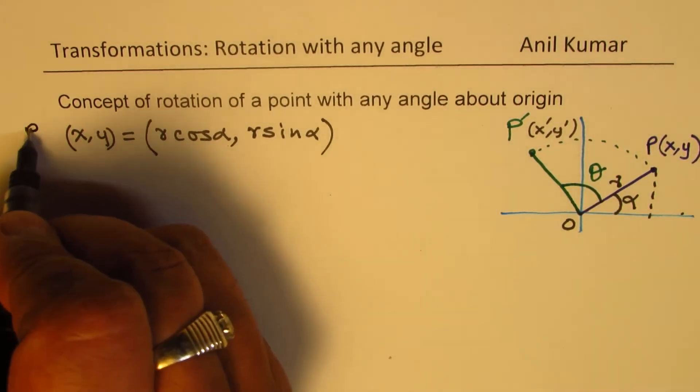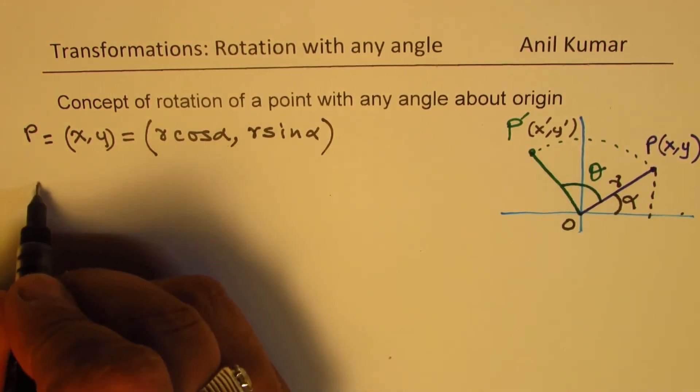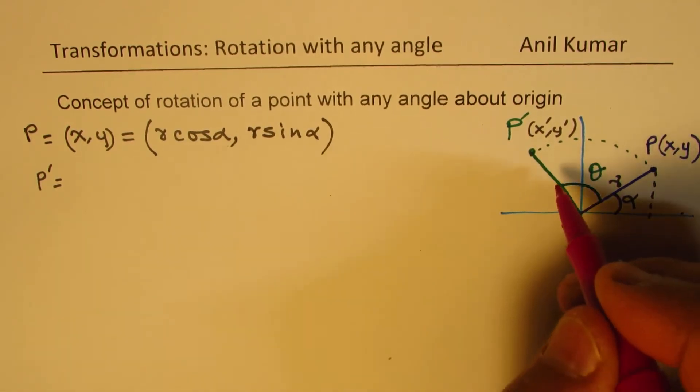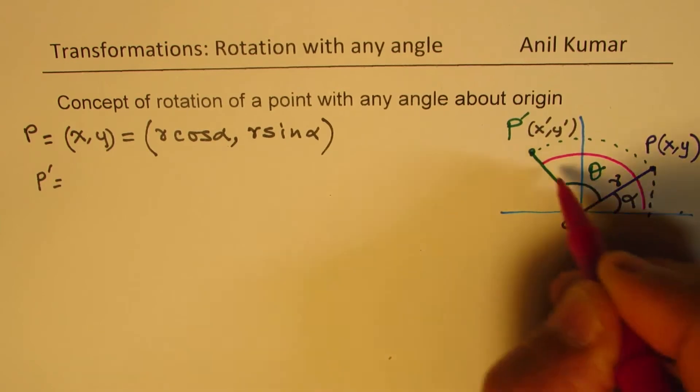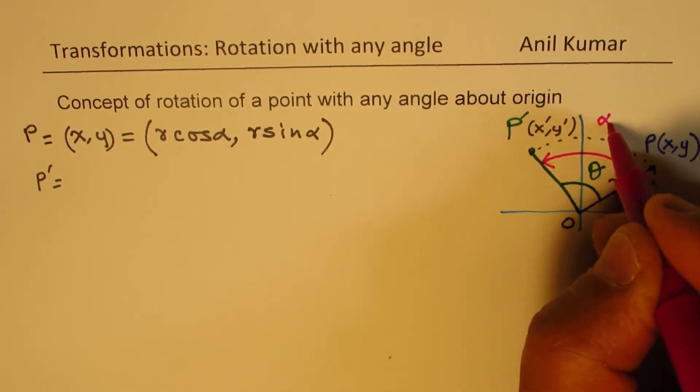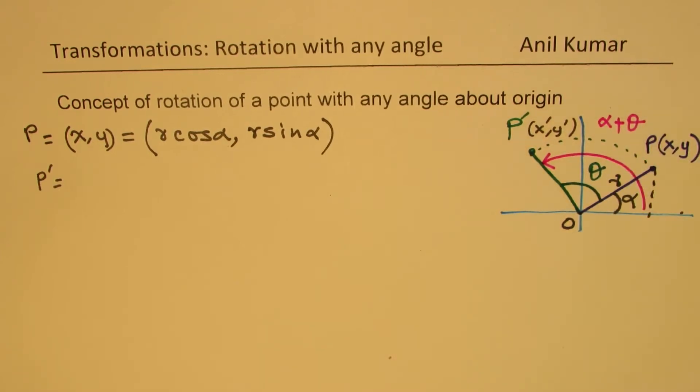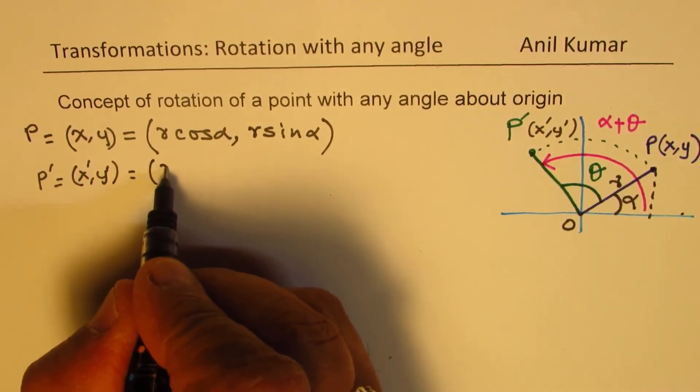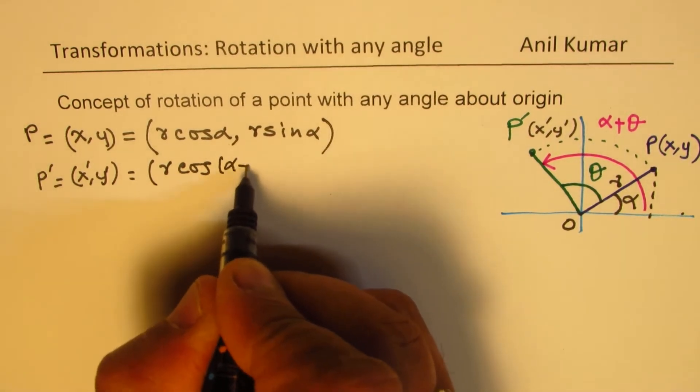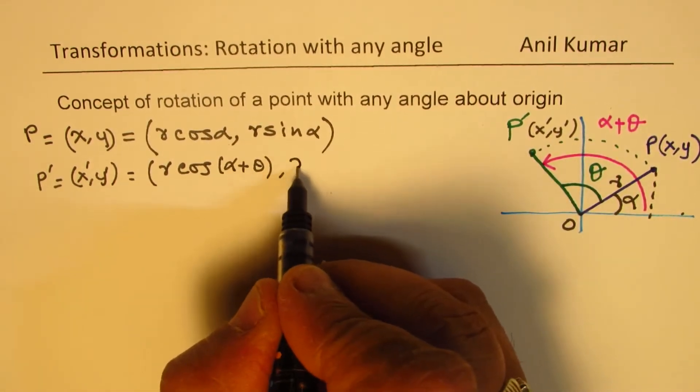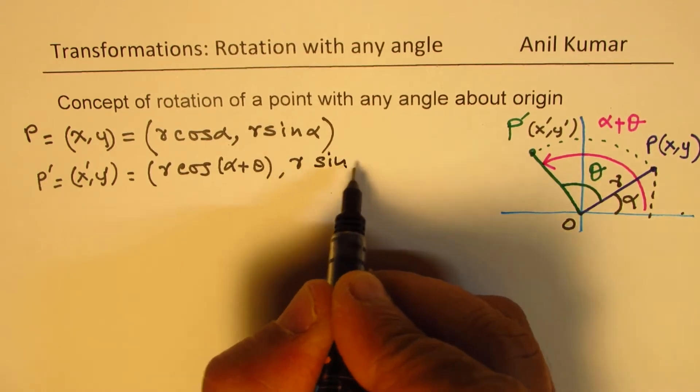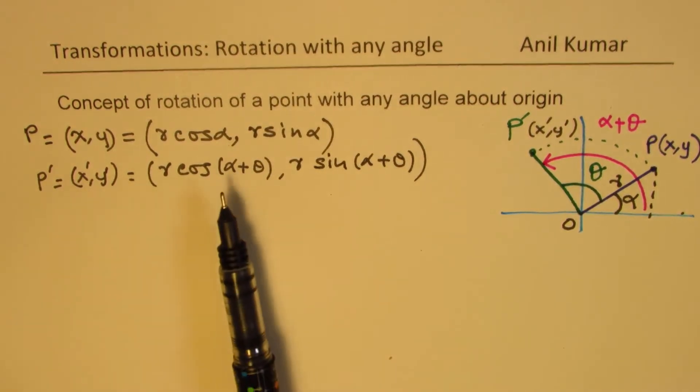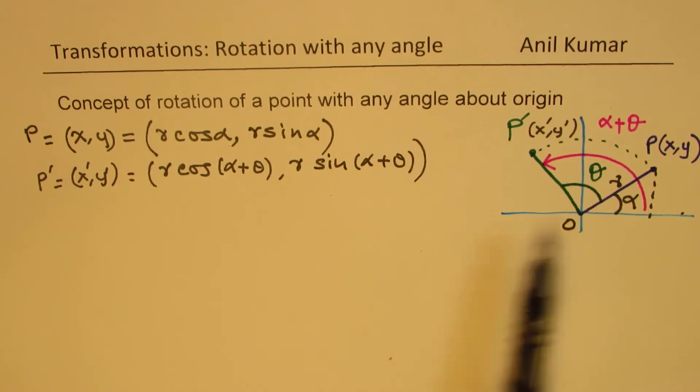So this is the point P which we are talking about. As far as point P dash is concerned, you can clearly see that now the angle is alpha plus theta. So this angle here is alpha plus theta. So the coordinates x dash and y dash can now be written as r cos of alpha plus theta, and y values should be r sin alpha plus theta. So with this result, we can easily get the coordinates after rotation about the origin.